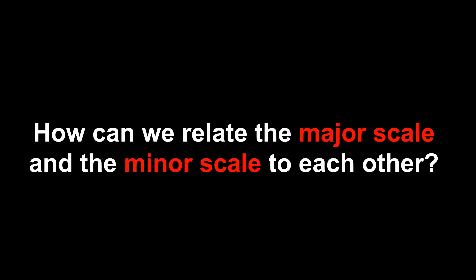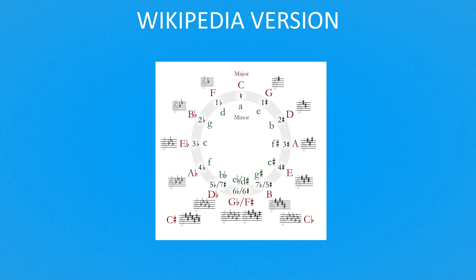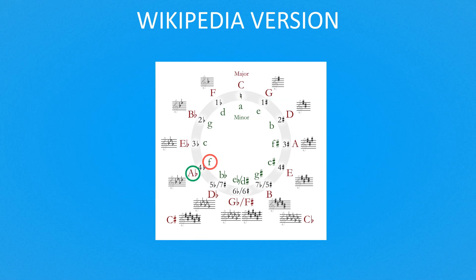The first question is: how can we relate the major scale and the minor scale to each other? In the Wikipedia version, the first information we can get is the relationship between major and minor scale. For example, C major scale is relative to A minor scale, and G major scale is relative to E minor scale. Of course, we can also do the reverse — knowing a minor scale, we can get the related major scale.